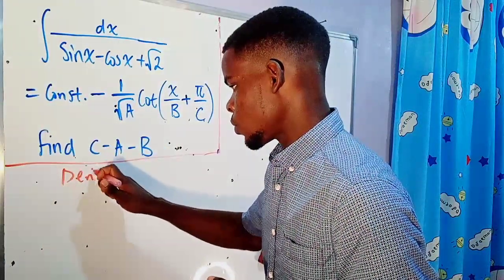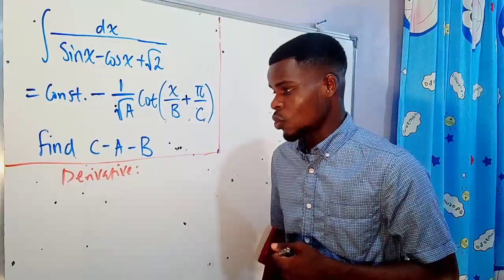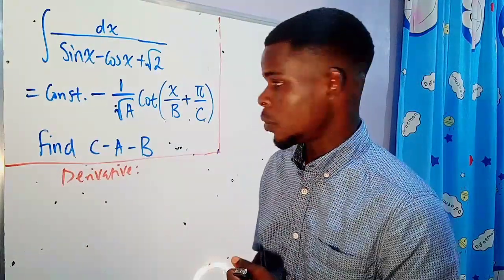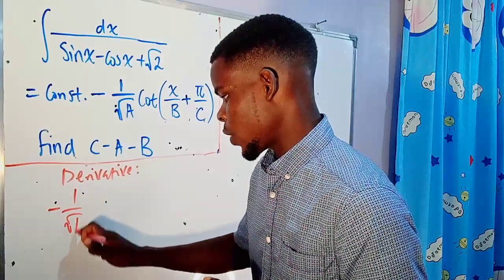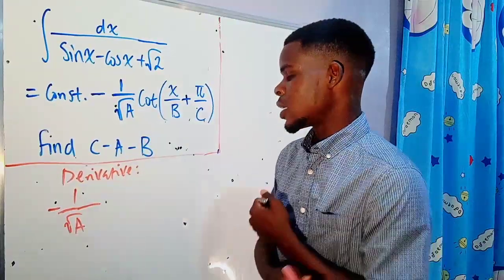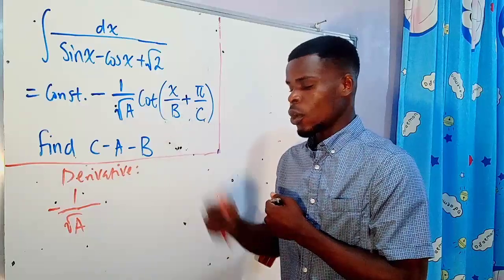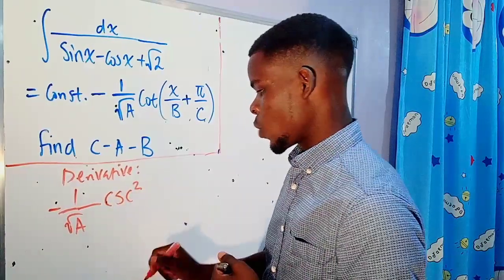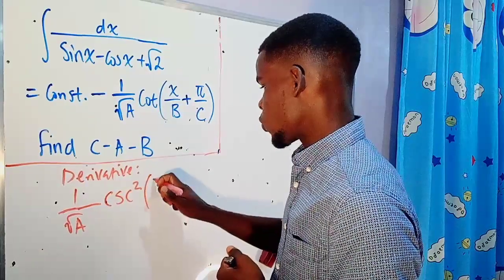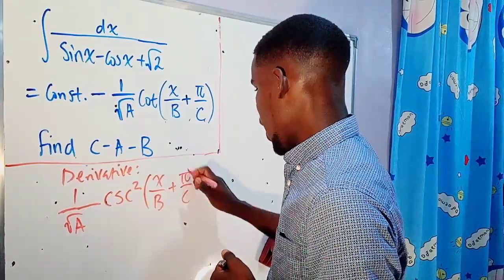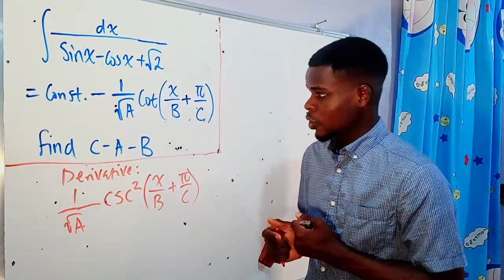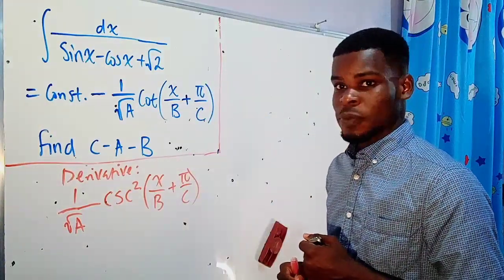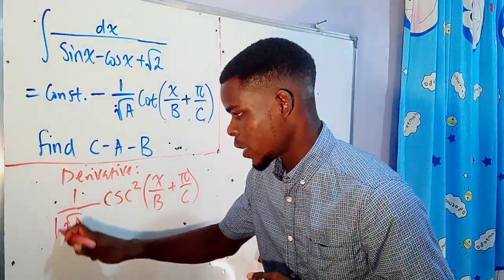Let's see what the derivative of that given integral looks like. Differentiating the arbitrary constant gives zero. For the constant multiple, we get 1 over the square root of a. The derivative of the cotangent of an angle is negative cosecant squared of that same angle, and since we already have a negative sign, it becomes positive cosecant squared. We then look inside the argument: we have x over b, whose derivative is 1 over b — that's the chain rule.